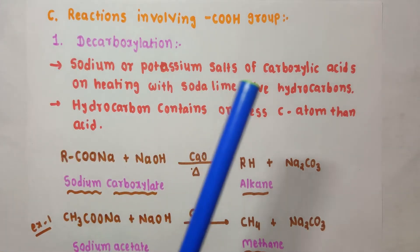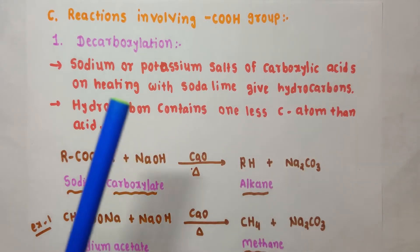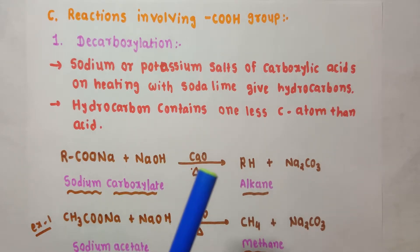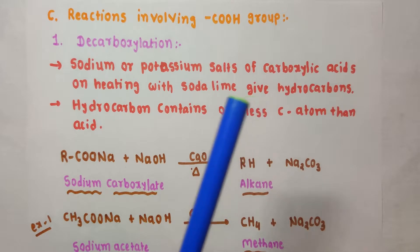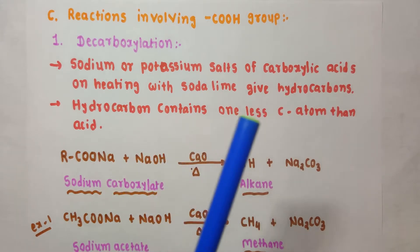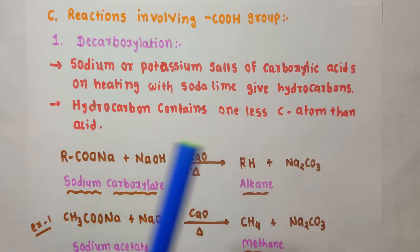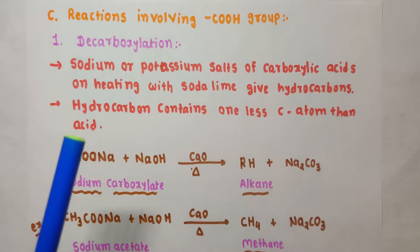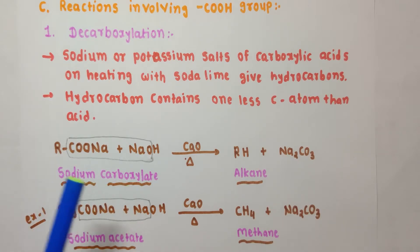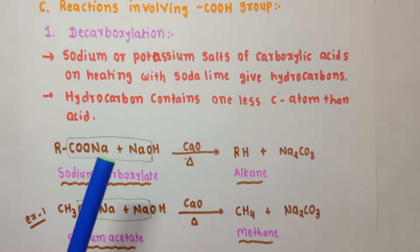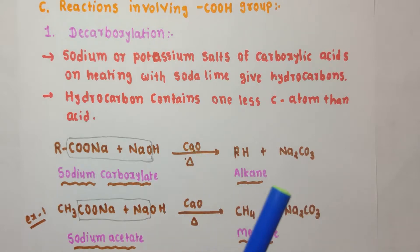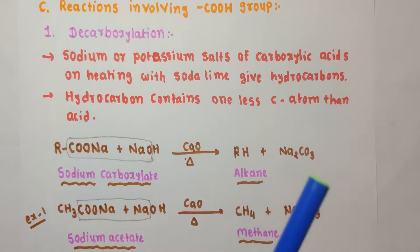Sodium or potassium salts of carboxylic acids, upon heating with soda lime, undergo decarboxylation. Soda lime is a mixture of NaOH and calcium oxide in a 3:1 ratio. Upon heating, they give hydrocarbons containing one less carbon atom than the original carboxylic acid. The sodium carboxylate reacts with soda lime to give alkane plus Na2CO3.